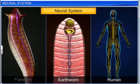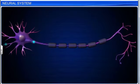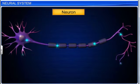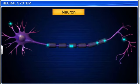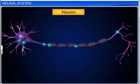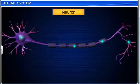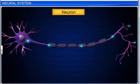All animals have a neural system that consists of highly specialized cells called neurons. These cells can perceive, receive, and transmit different kinds of stimuli. Hence, neurons are called the structural and functional units of the neural system.